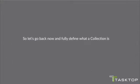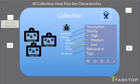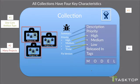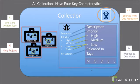So let's fully define what a collection is. First, they have one core artifact type. Second, they can come from many different projects. Third, they must be sourced from one repository. And fourth, they all must map to one model. That is the definition of a collection.